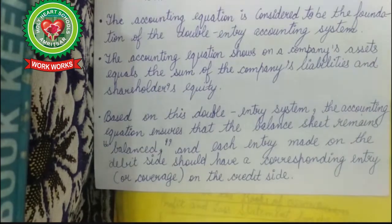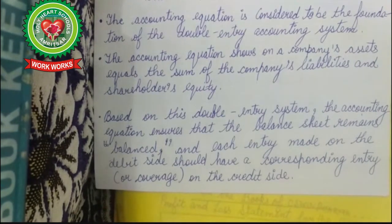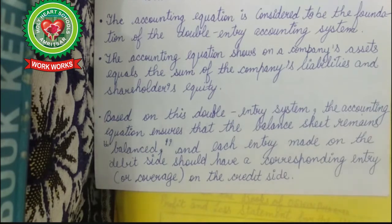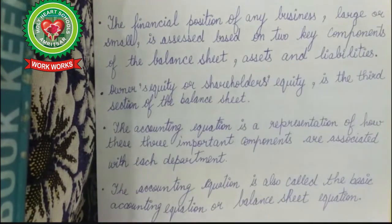The accounting equation is considered to be the foundation of the double entry accounting system. Assets equals liabilities plus equity — as seen in the balancing rod, assets on one side and liabilities and equity on the other. Based on this double entry system, the accounting equation ensures that the balance sheet remains balanced, so that each entry made on the debit side has a corresponding entry on the credit side. The financial position of any business, large or small, is assessed based on two key components of the balance sheet: assets and liabilities.